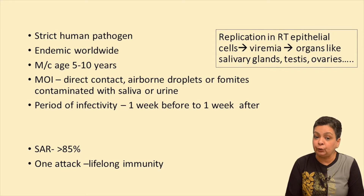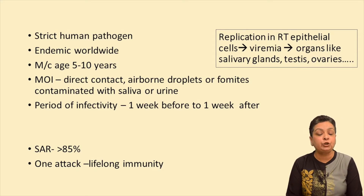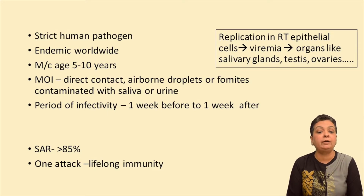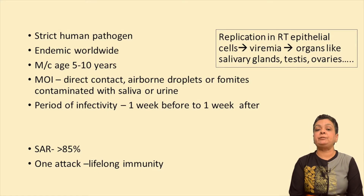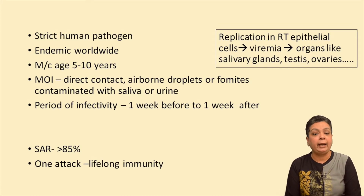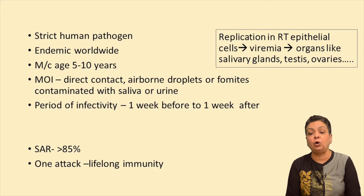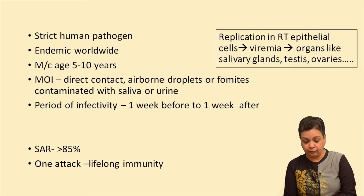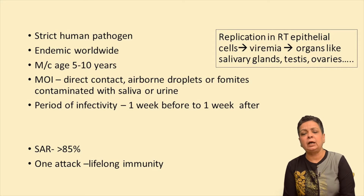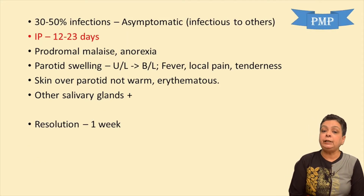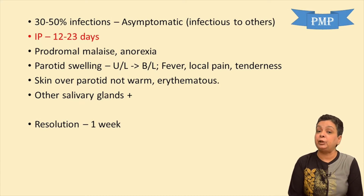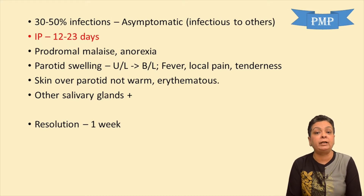Mumps is a strict human pathogen, endemic worldwide. The most common age group affected is 5 to 10 years. Mode of infection is direct contact, airborne droplets, or via fomites contaminated with the patient's saliva or urine. Period of infectivity is one week before to one week after onset. Secondary attack rates are very high, more than 85%, and one attack of mumps leads to lifelong immunity. 30 to 50% of infections are asymptomatic, but the patient is infectious to others via saliva and urine.